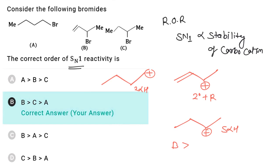So the rate of SN1 reaction will be maximum in B, then C, then A, and hence the correct answer is B.